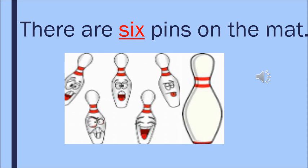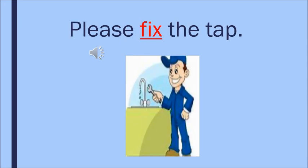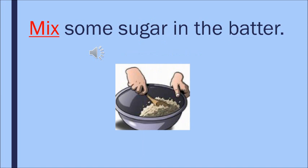The first sentence is: There are six pins on the mat. So there are six pins — S, X, six. The next sentence is: Please fix the tap. Once more, please fix the tap. There is a request here. The next word is mix. Mix some sugar in the batter — they are making some batter and they have to mix some sugar in it. So mix some sugar in the batter.